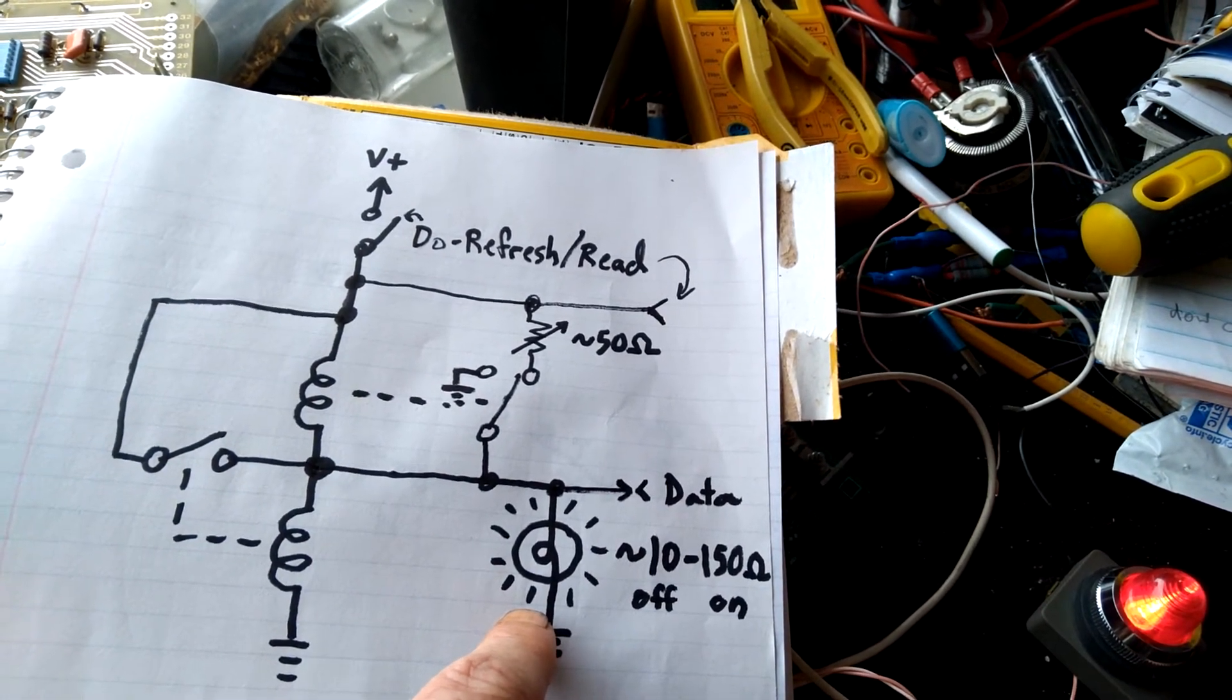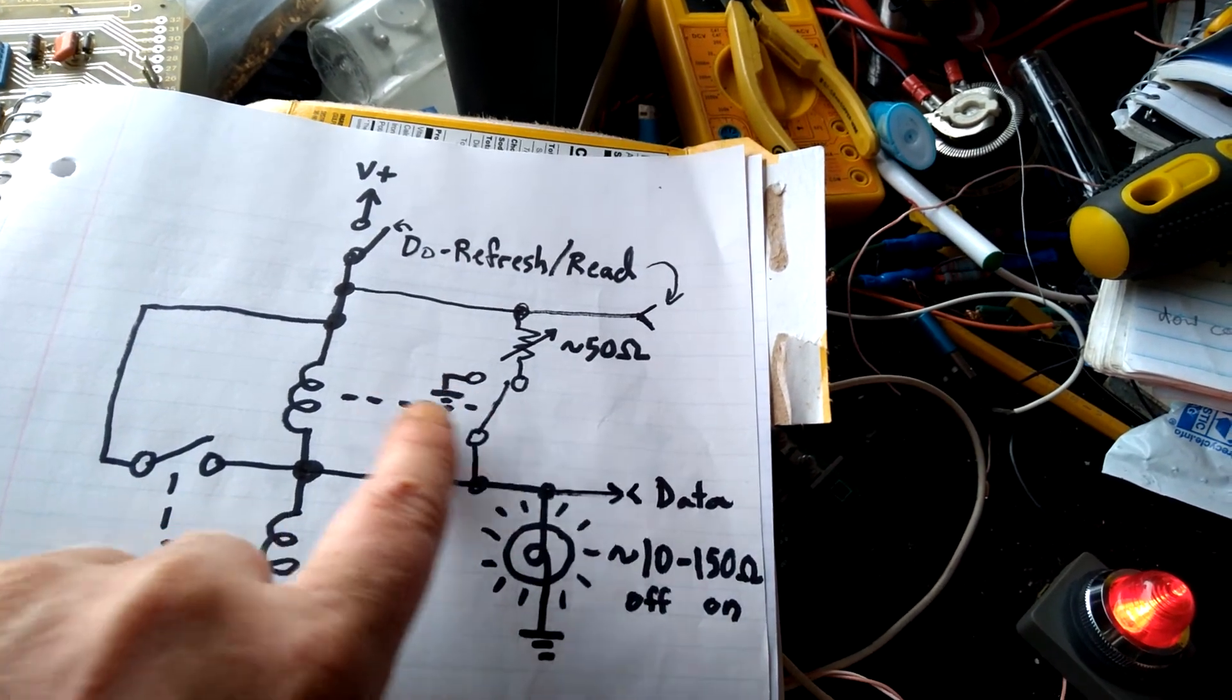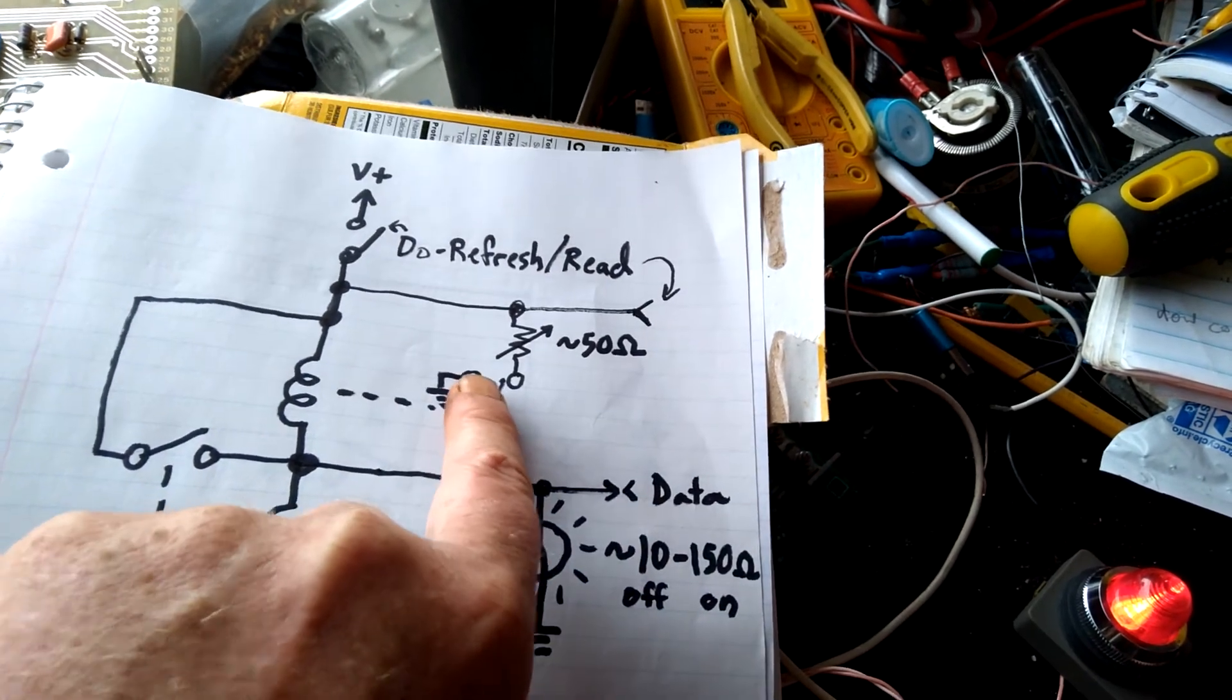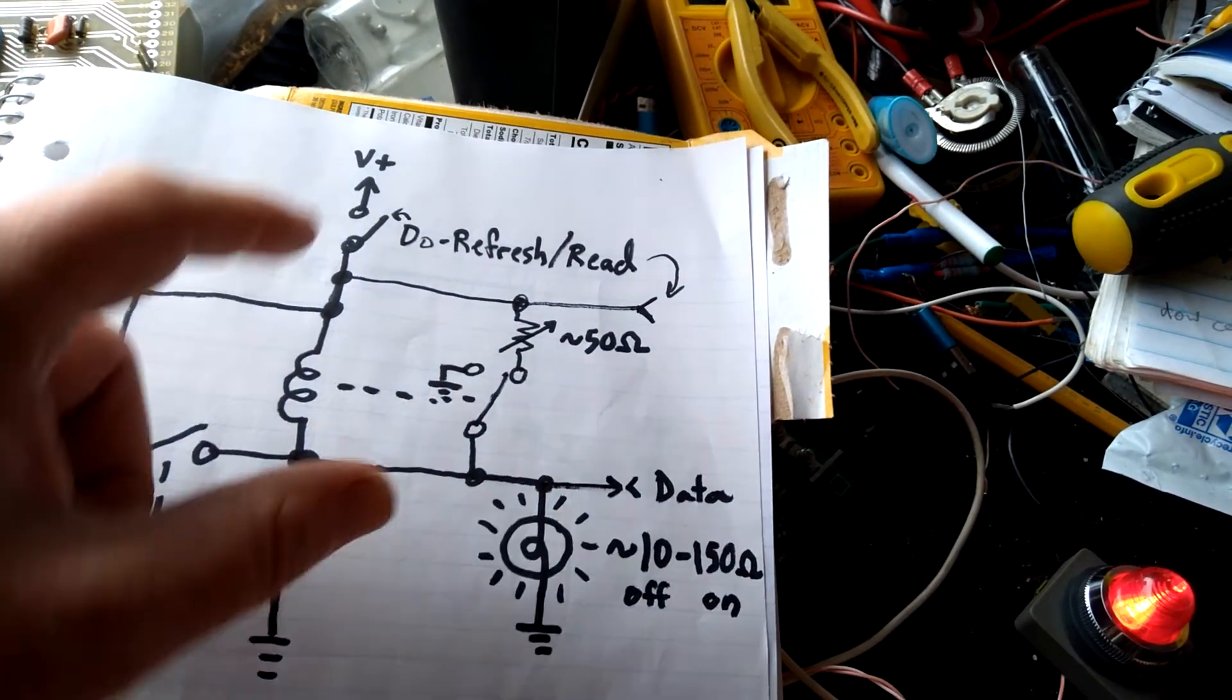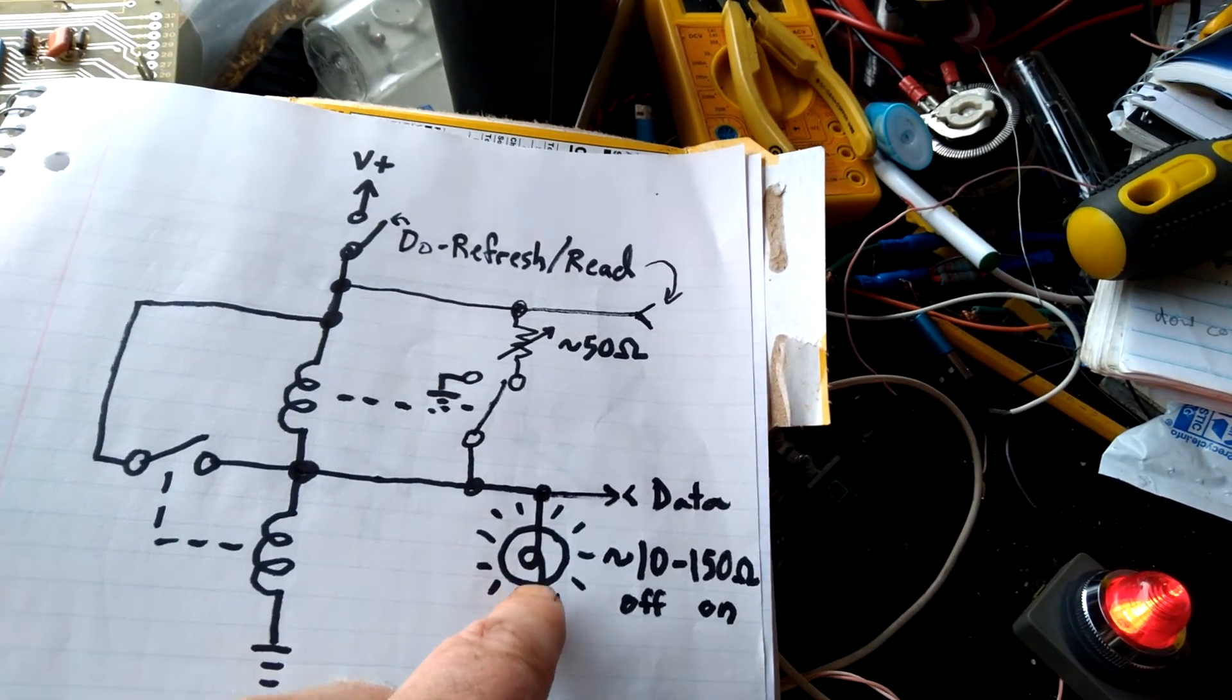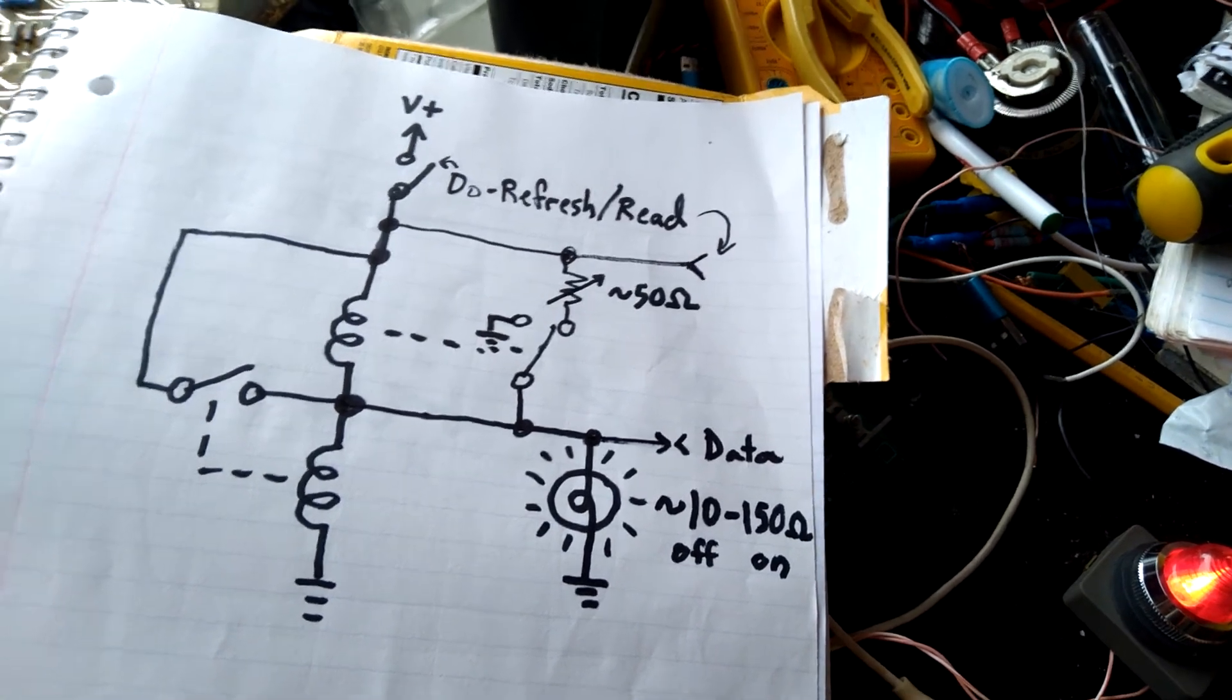And when you do that, then it starts switching faster because the voltage is dropped. But then as it gets to there, then it shorts itself out to ground. And that keeps the voltage, it keeps that relay on and shorts out the bulb so that it doesn't heat it up anymore. And I guess that's all I can say right now.